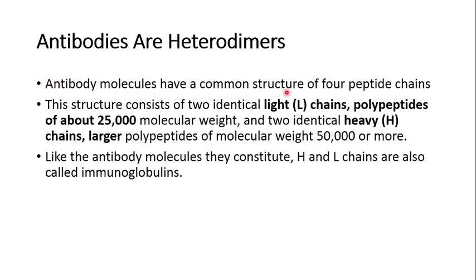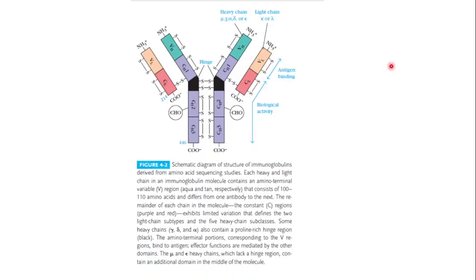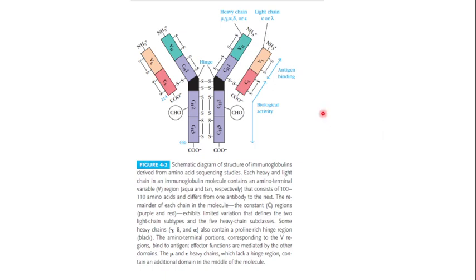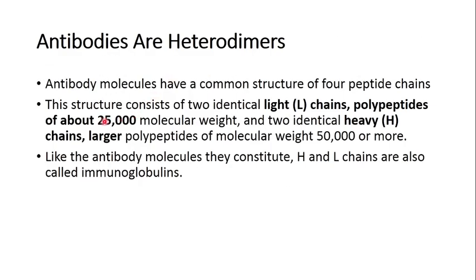An antibody molecule has a common structure of four polypeptide chains. We can see the basic structure of the antibody here — it consists of four polypeptide chains: one polypeptide chain here, one here, one here, and one here.